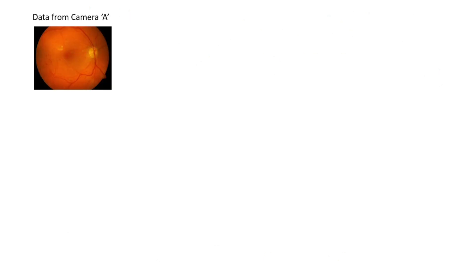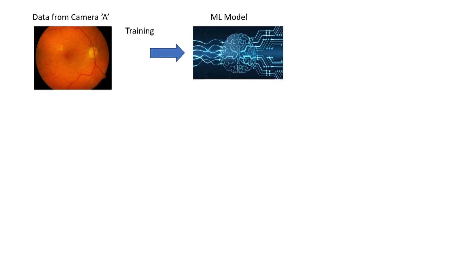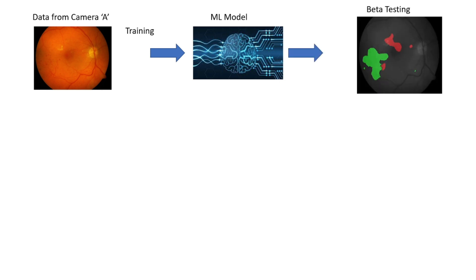For the example today, I am going to be reusing the U-Net model for semantic segmentation that I've already published, linked in the description box below. Here, let's consider that you already have medical images — in this case, retinal images from a camera A — and you use these images to train a machine learning model to detect pathology. While you train and test, if all the images are from camera A, you will start getting good results where the red lesions and the bright lesion areas are correctly identified.